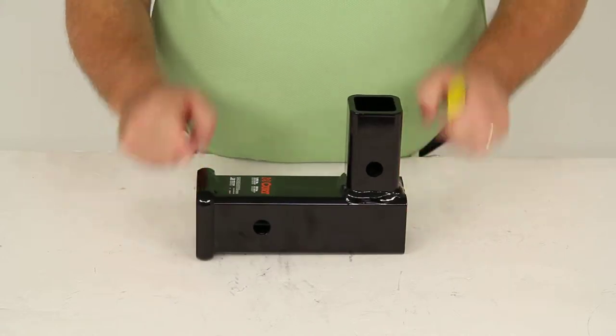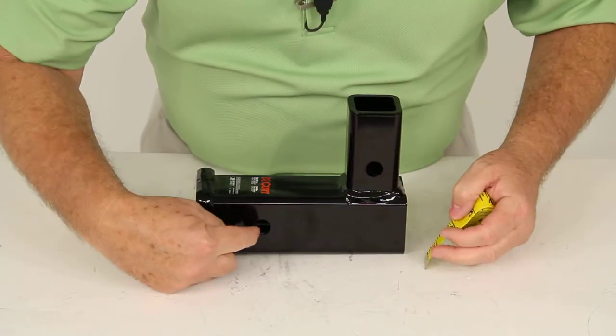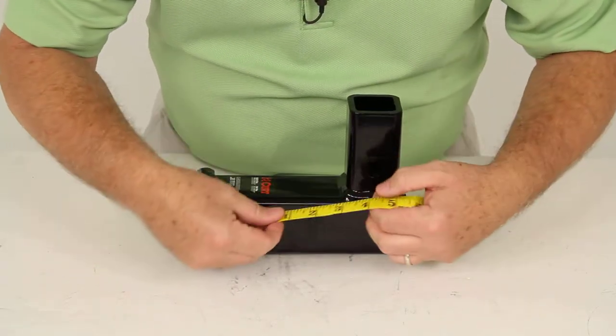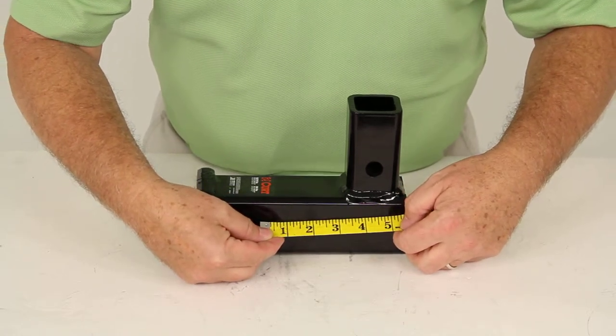Now a few specs. The overall length from the center of this hitch pin hole to the center of this hitch pin hole is four and a quarter inches.